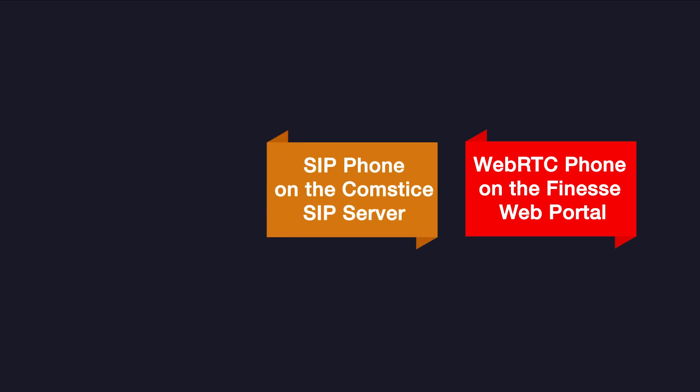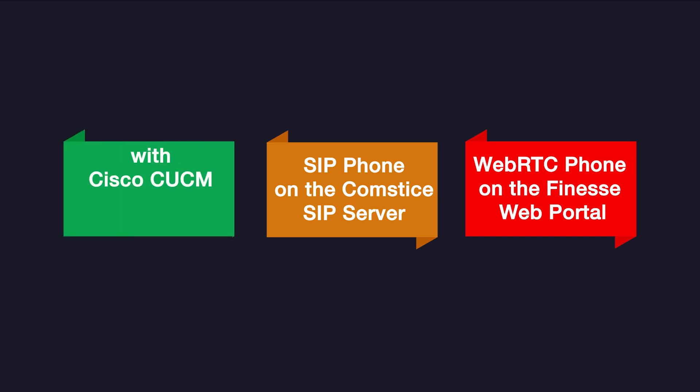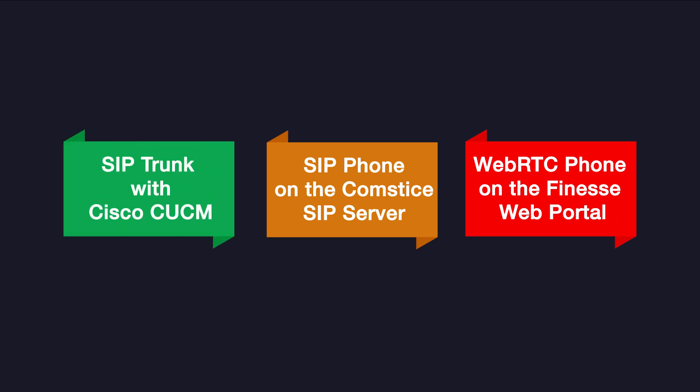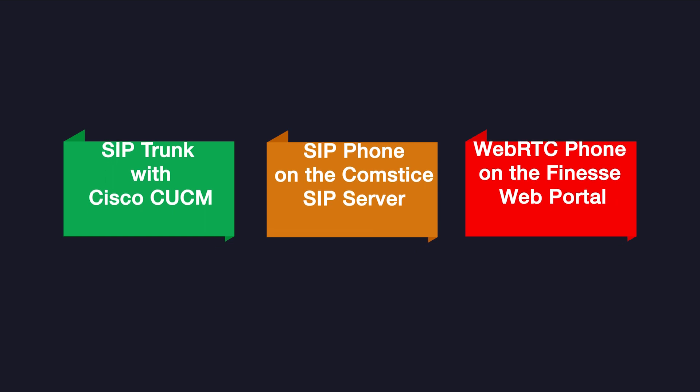The Comstis Web Phone Gadget is a WebRTC phone running in the web browser. WebRTC is converted to SIP on the Comstis WebRTC Gateway, and the web session registers as a SIP phone on the Comstis SIP proxy. Cisco Call Manager then sends the customer call to the agent's SIP extension on the Comstis SIP proxy via a SIP trunk, and the WebRTC phone answers the call on the agent side.